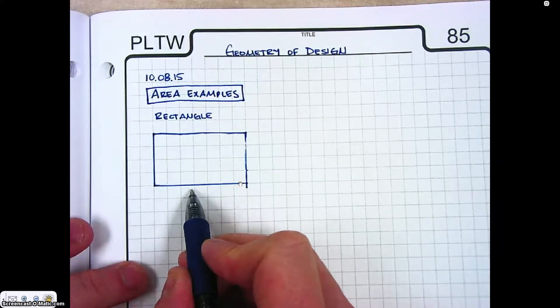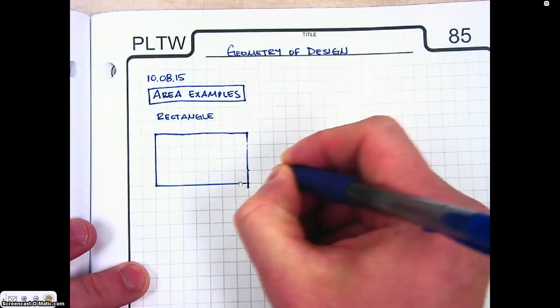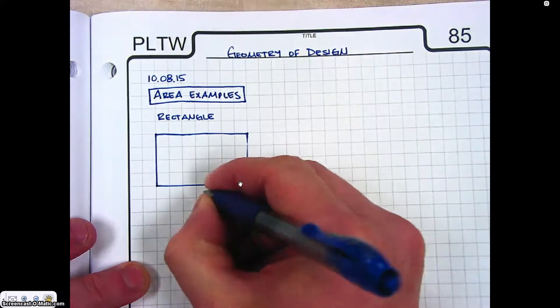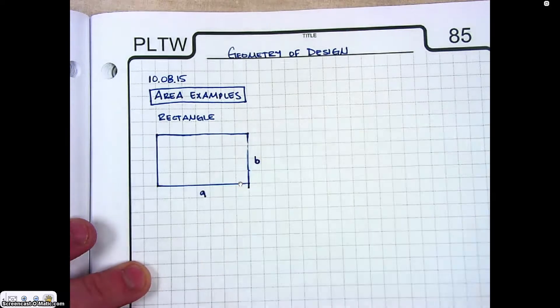we can label the sides. So we'll label this side A and this side B.